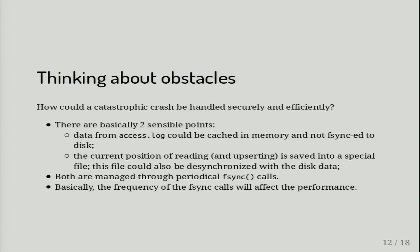How can a catastrophic crash be handled securely and efficiently? If that happens, there are two essential files which can be corrupted or incomplete: the access log and the bin log. You can manage that by f-syncing them as often as possible. If you restart the machine or have a crash, you can recover the data and continue inserting what is there.